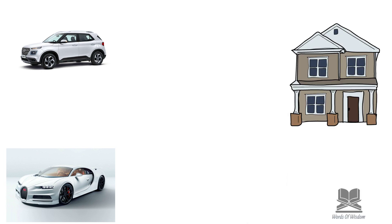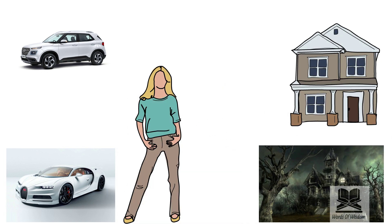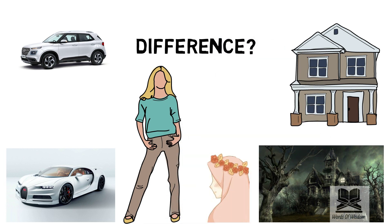A car, a fast car. The house, the haunted house. A girl, a small intelligent pious girl. What is the difference between sentence number one and sentence number two in each of these examples? In each of these examples, I have described the noun using descriptive words. That is exactly what we will be covering in this lesson.